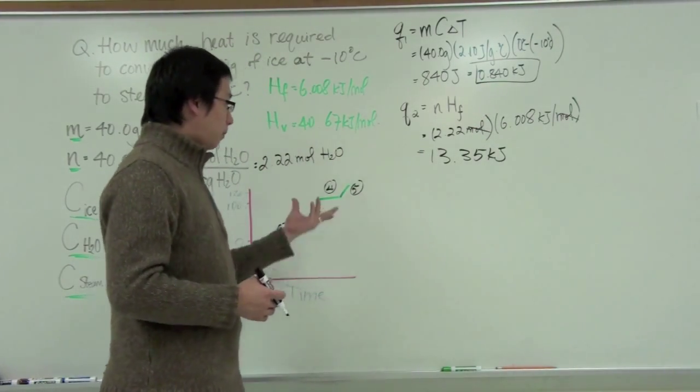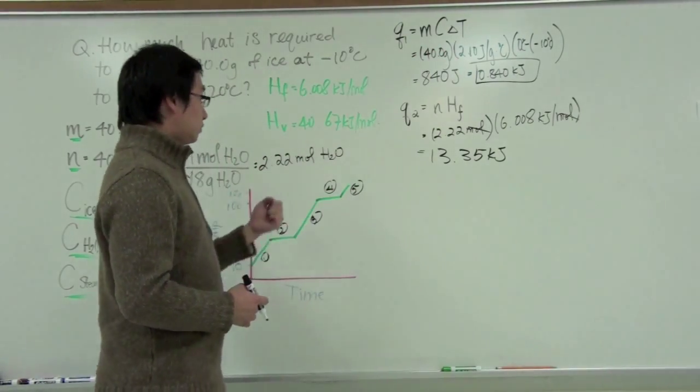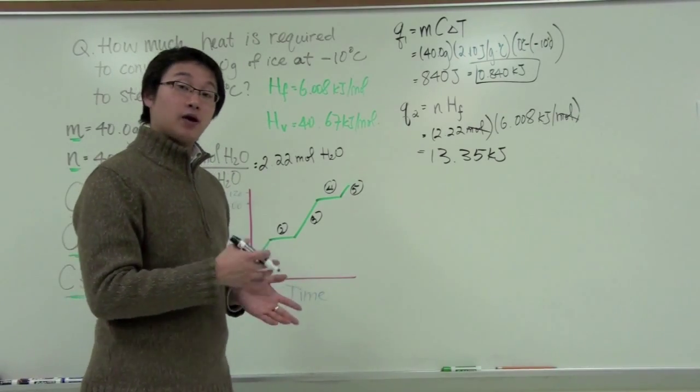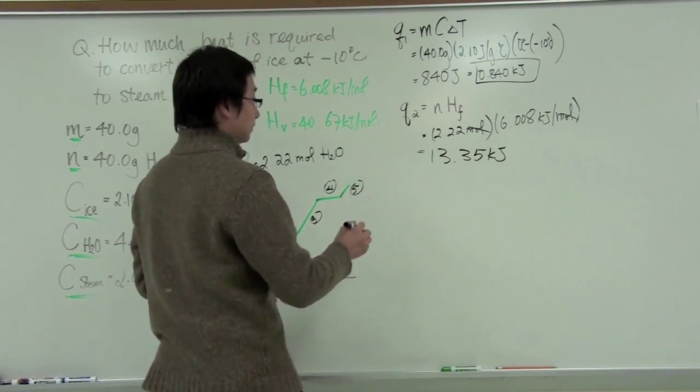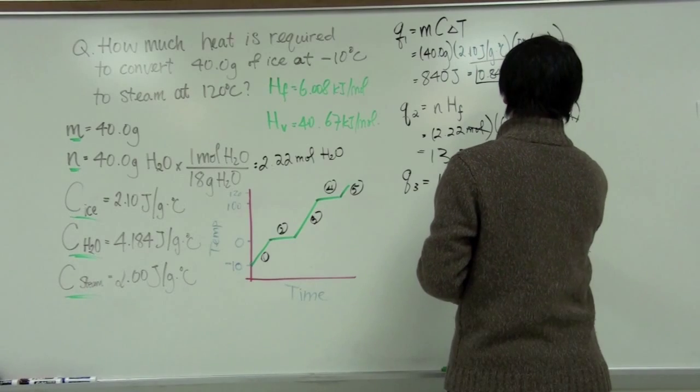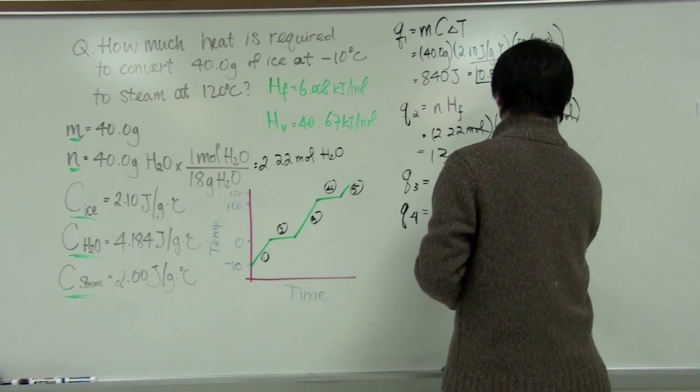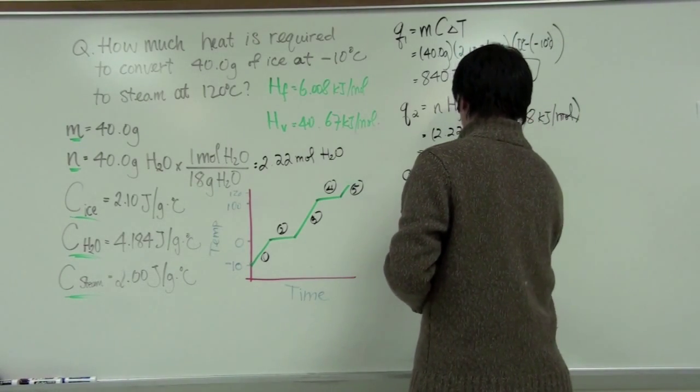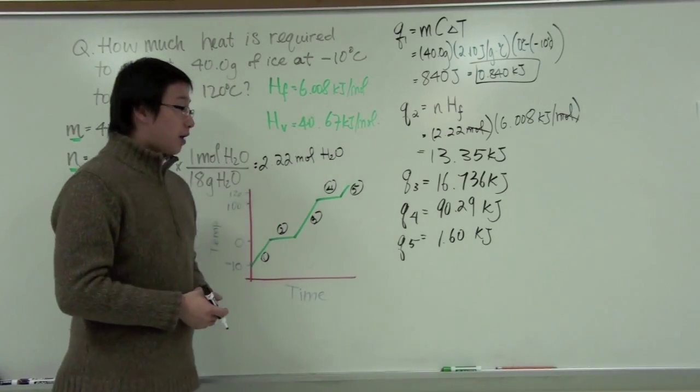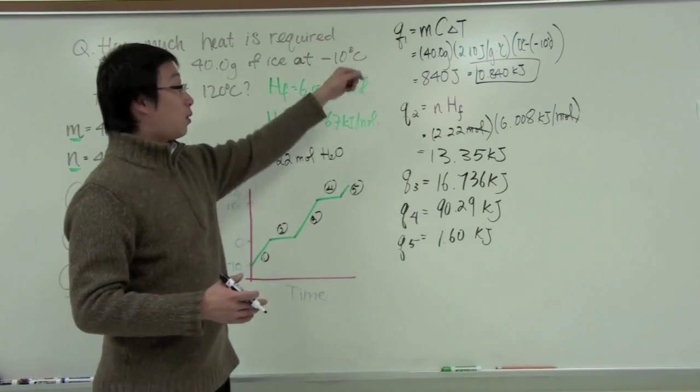Now for part three, part four, and part five, it resembles part one and two. If you see a change of temperature, you will use MC delta T. If you see a change of state, it will be the number of moles times the heat of fusion or vaporization, depending on what is the change. So let's just quickly write down the values. After you have all these values calculated, I skip the calculations because it is very similar to what we did in the first two calculations.